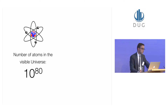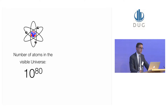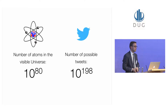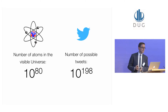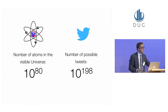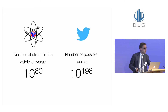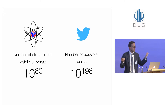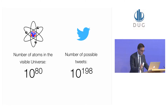The number of atoms in the visible universe is of the order of 10 to the 80, so there's lots of data out there. But even this has been dwarfed in recent years by the rise of social media — the number of possible tweets is far, far bigger than the number of atoms in the universe, about 10 to the 188, and the number does not include emojis. As somebody said, if you give a monkey a keyboard and enough time, they will randomly produce Shakespeare's sonnets — which is true, and this is included in that number, although most of those tweets are gibberish.